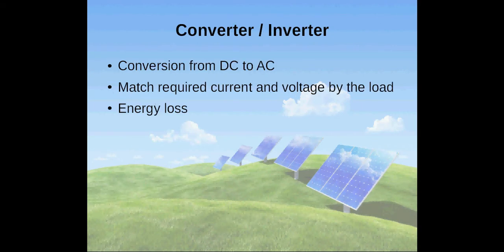A converter allows the DC electricity stored into the batteries to be converted to AC or alternating current electricity, the type of energy that is used by the mains power supply. The DC AC or direct alternating converter is also called an inverter and it is used to match the required current and voltage by the load. It is typical to experience some energy loss during electricity conversion.